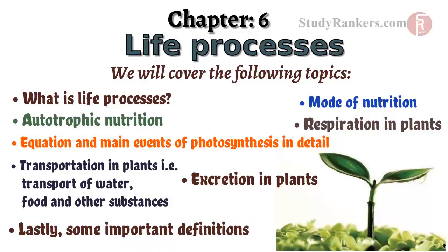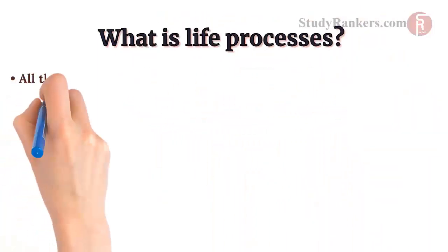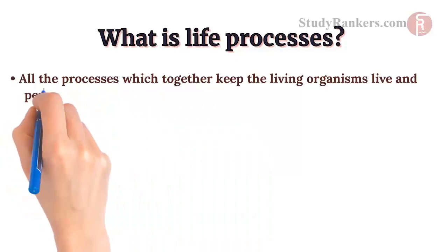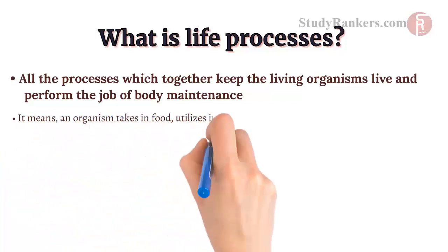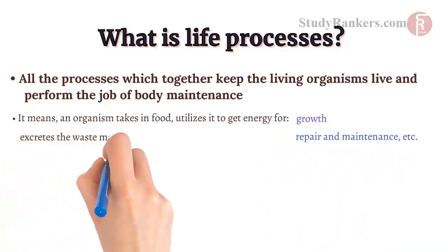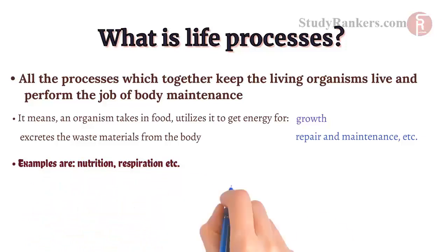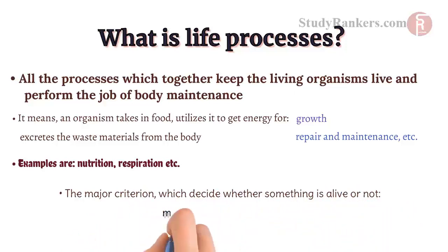Let's start with our first topic. The very first thing that comes to our mind before starting the chapter is what is Life Process? Life Process is all the processes which together keep the living organisms alive and perform the job of body maintenance. It means an organism takes in food, utilizes it to get energy for growth, repair and maintenance etc. and excretes the waste materials from the body. Examples are nutrition, respiration etc. The major criterion which is used to decide whether something is alive or not is movement and growth.